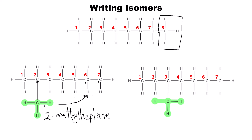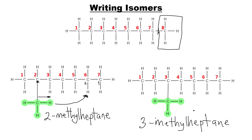The next trick to get the next isomer is to shift the methyl group to the next carbon atom — from carbon two to carbon three. That gives you 3-methylheptane. Note that a student who numbers from right to left and places the methyl group on the equivalent carbon still gets 3-methylheptane, because either positioning gives the same name.